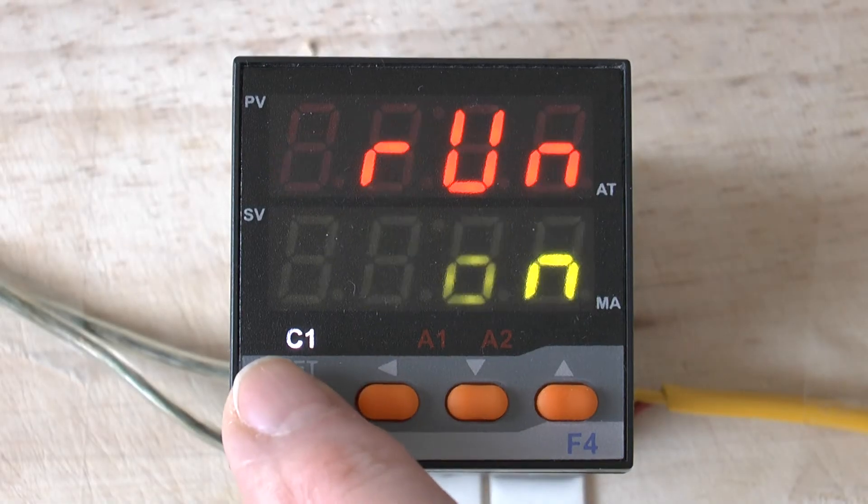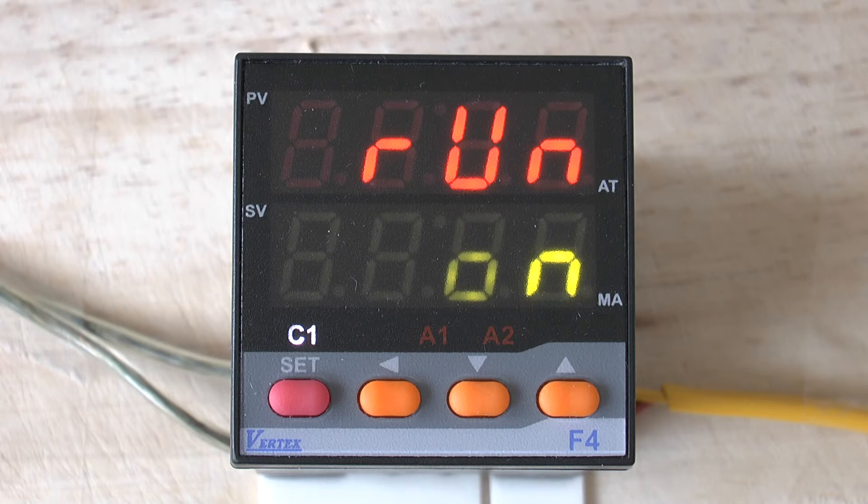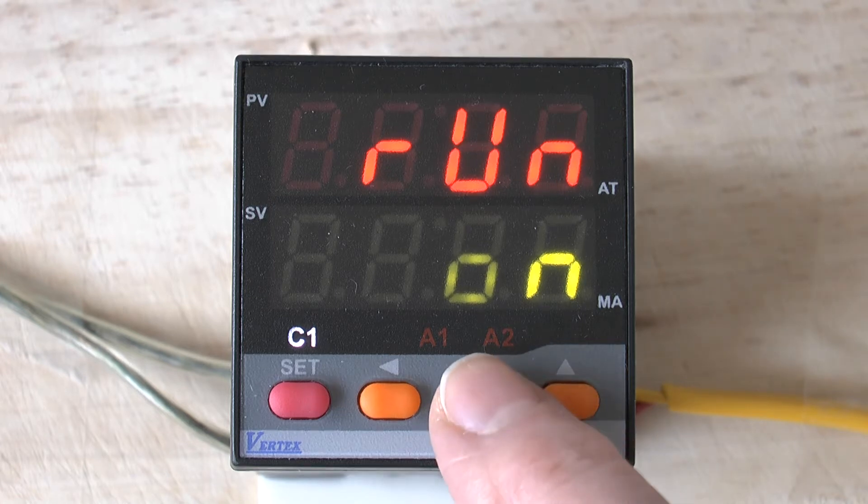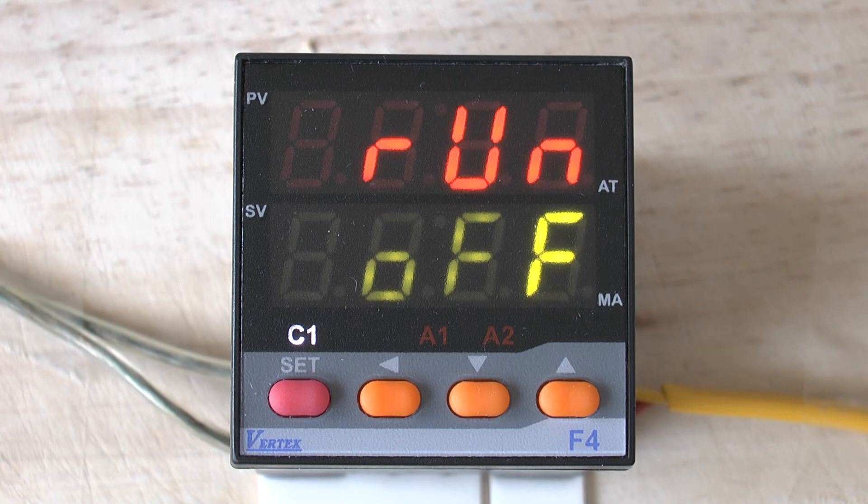The next parameter is the RUN parameter. The default condition for this parameter is ON, indicating that the control output is being determined by the controller. If you push the DOWN button once, you can turn the output OFF. This will turn both the ALARM output and the control output OFF.